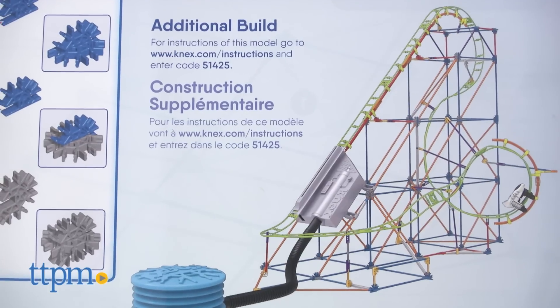Plus, there's an additional build that also uses the stomp launcher to launch the coaster car, and instructions for that can be found on the K'nex website.